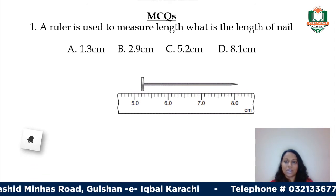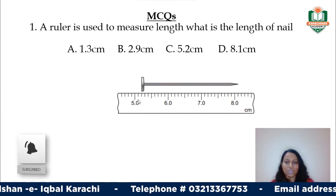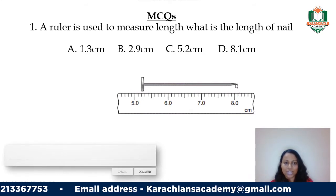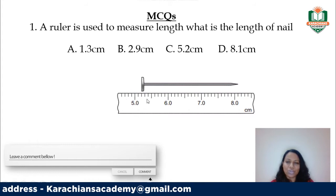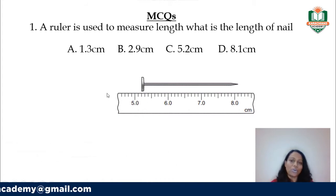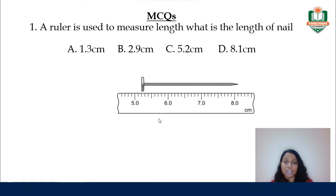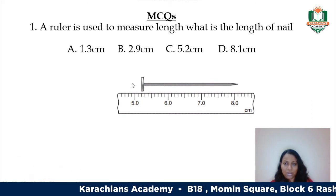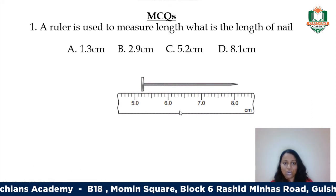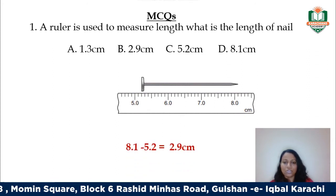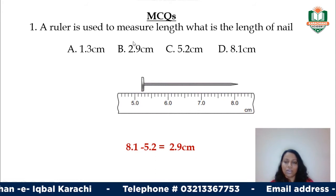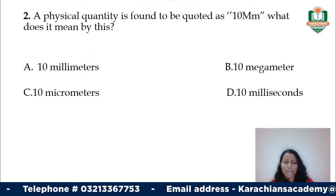What is the length of the nail? If you look at the nail closely, it's part of a ruler given to you. You look at the value at one end and the value at the other end and subtract them. Remember, it is better not to take a reading right from zero because there may be wear and tear — the numbers may be erased — or if the ruler is really thick, there can be random errors. So we look at the point at 8.1, then the other at 5.2, and subtract: 8.1 minus 5.2 gives you 2.9 centimeters. So your answer is B.